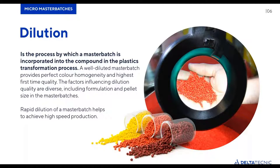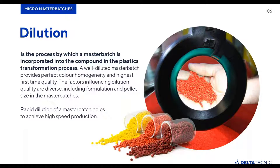Let's go into the concept of dilution. Here we are not talking about what happens during the master batch manufacturing process — we are talking about what happens during your cable manufacturing process. Dilution is a process by which a master batch is incorporated into the compound during the plastics transformation process, in this case the extrusion process for cable production. A well-diluted master batch provides perfect color homogeneity and highest first-time quality.